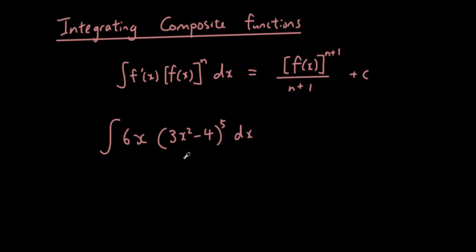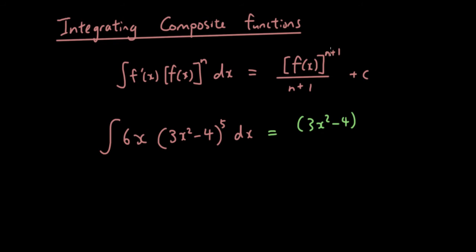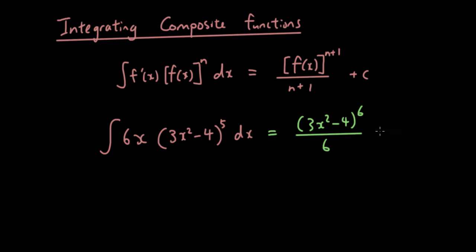Since it matches the formula, we just copy out f(x), which is 3x² - 4, raised to the power of n+1 — in this case 5+1 = 6 — over 6, plus c. That's it, you've done it. How easy is that?